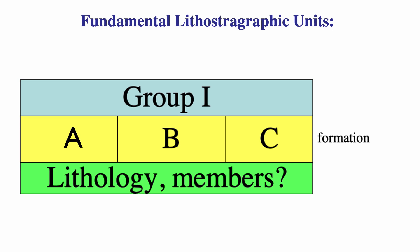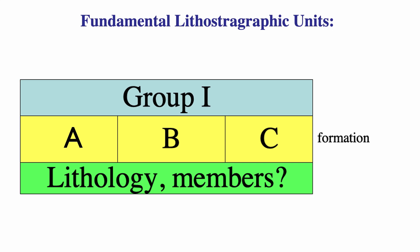Formations can be grouped into groups, which contain any number of members. Groups themselves, especially in the Middle East, can be bundled into supergroups containing multiple groups. Each of these units is a unit of convenience — there's not a lot of strict science in the grouping; it's more a matter of convenience. The key rule is that a formation must be large enough to be mappable.